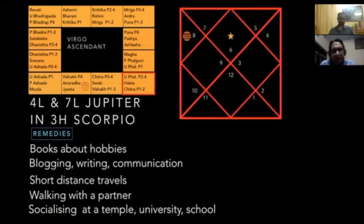For Virgo ascendant, Jupiter is the fourth lord and seventh lord transiting through the third house of Scorpio. Definitely third house is hobbies, so books about hobbies is straightforward.